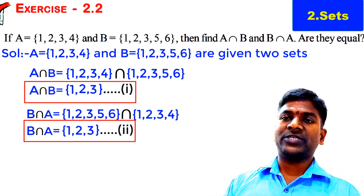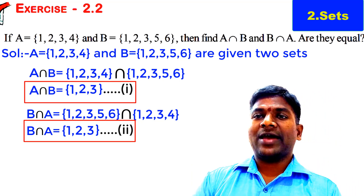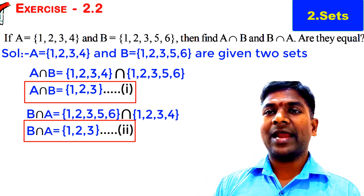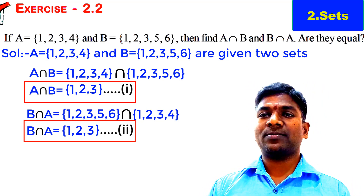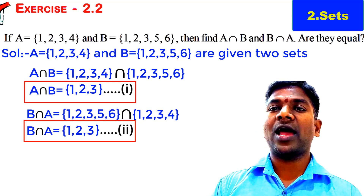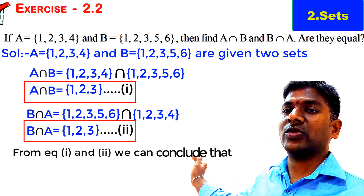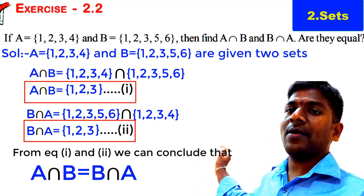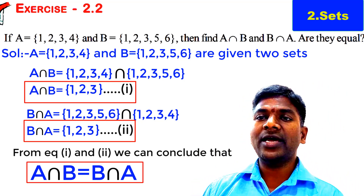What do you observe from these two equations? A intersection B and B intersection A are equal, because A intersection B consists of the elements {1, 2, 3} and B intersection A also consists of the elements {1, 2, 3}. From equations 1 and 2, we conclude that A intersection B = B intersection A.